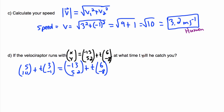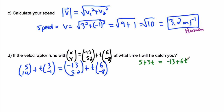We extract the parametric equations — the x-components from each side. The left side gives 5 plus 3t, and the right side gives minus 13 plus 6t. Setting these equal: 5 + 3t = -13 + 6t. It turns out this single equation is enough to solve the whole question.